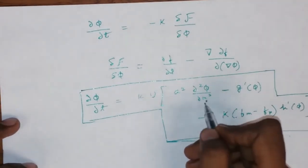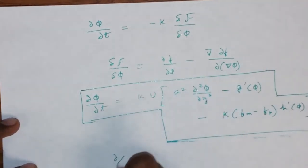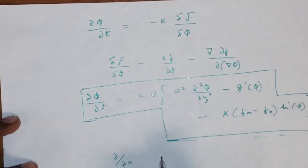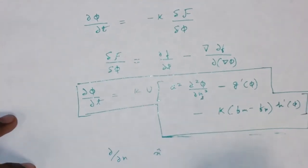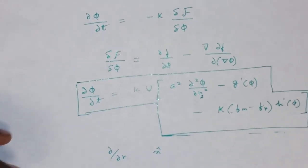Now, you might be wondering what this term is. So, the d by d N is basically the spatial derivative along the interface, which is normal to the direction of N. So, it's going to be in the direction of the interface. So, it's going to move along that direction.